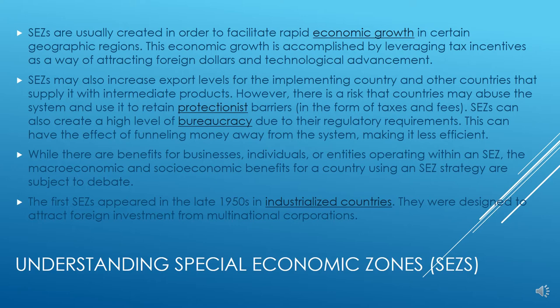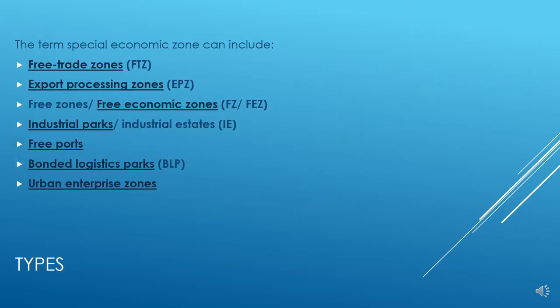The first special economic zone appeared in the late 1950s in industrialized countries, designed to attract foreign investment from multinational corporations — the first version being at Shannon Airport. The term special economic zone can include free trade zones, export processing zones, free economic zones, industrial parks or industrial estates, free ports, bonded logistics parks, and urban enterprise zones.